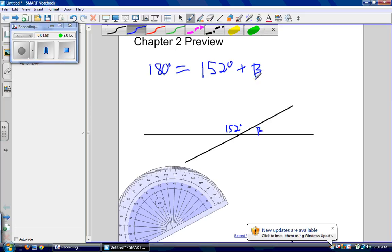So now to find beta by myself, if you remember your algebra rules, we need to subtract 152 degrees from both sides. And we get 28 degrees is equal to beta. So beta is 28 degrees.